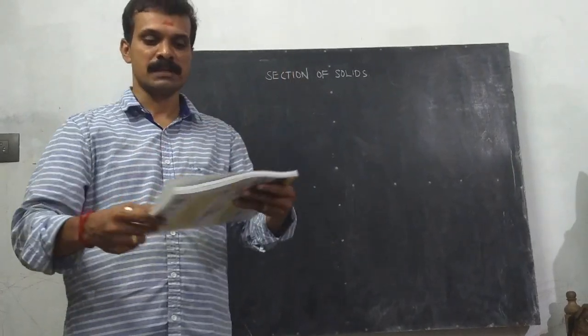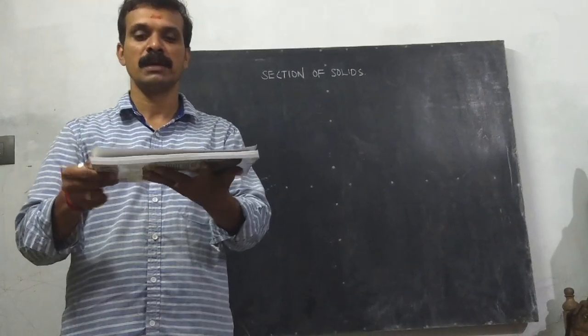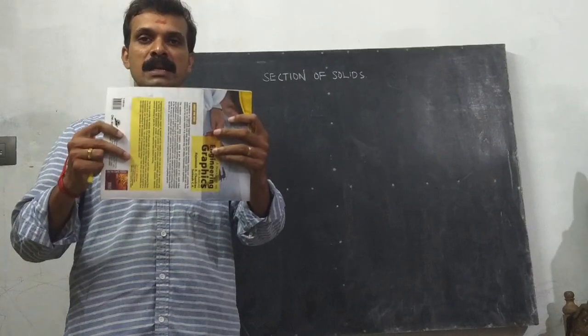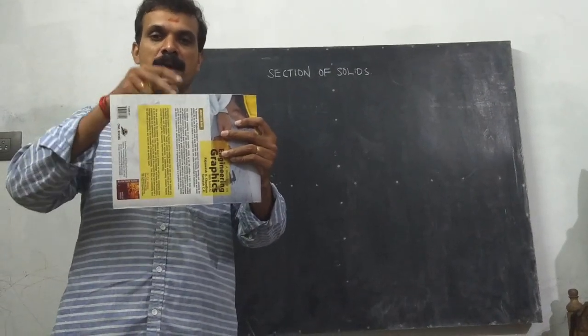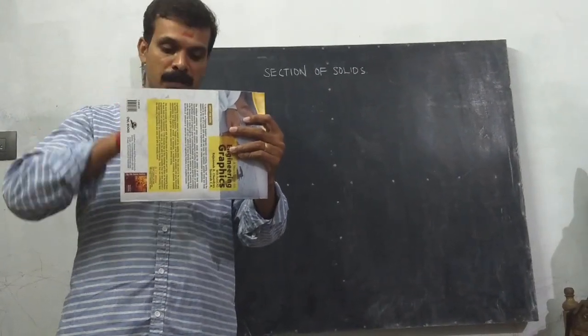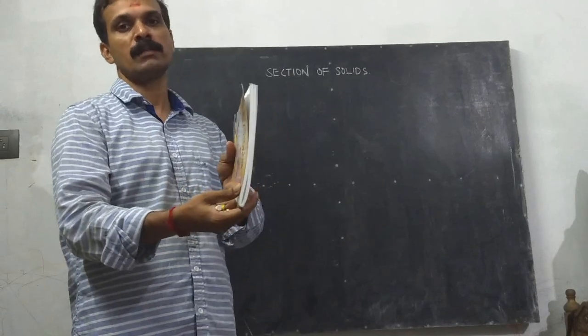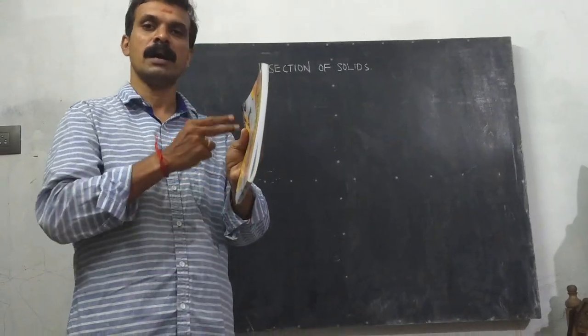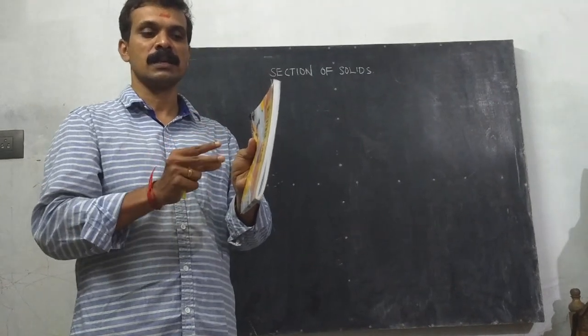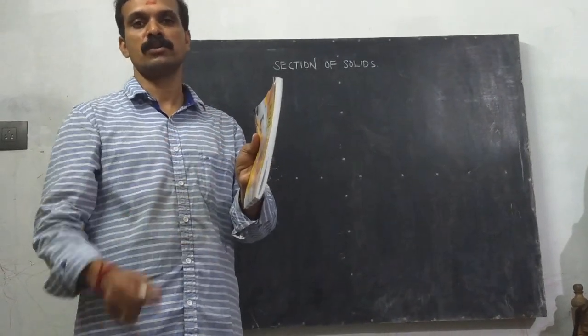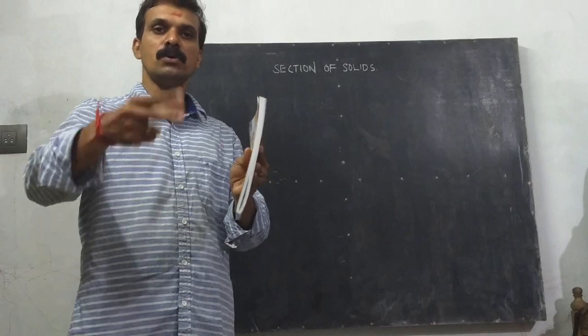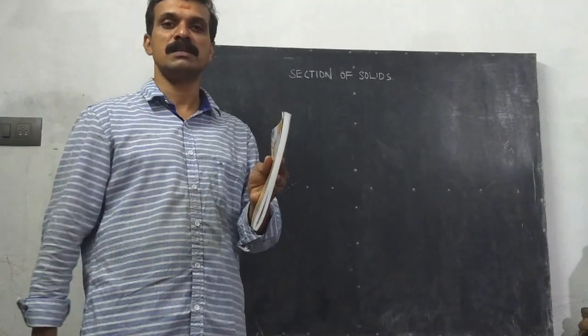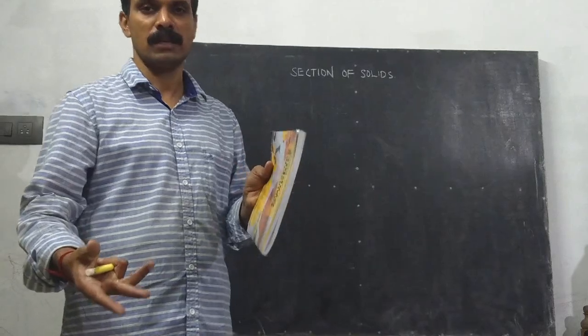So the basic three section planes are: one is a horizontal section plane which is parallel to HP and perpendicular to VP. Vertical section plane, this is parallel to VP and perpendicular to HP. And a profile cutting plane which is parallel to side plane perpendicular to both the HP and the VP. So these are the three classifications of the sectional plane. Now two more classifications are there for the section plane that we will see later. Thank you.